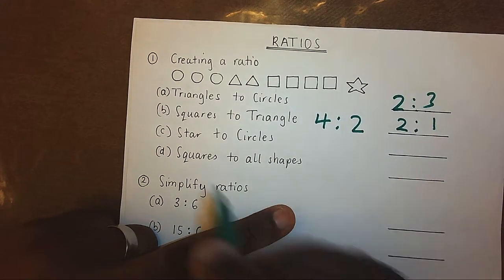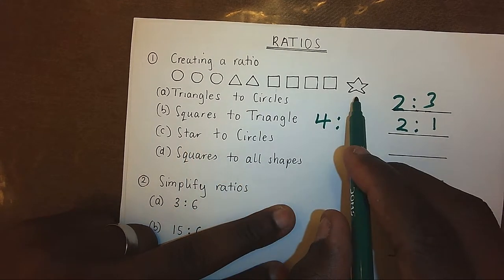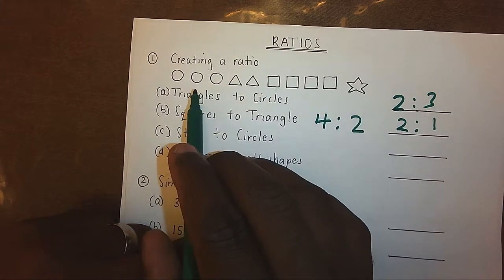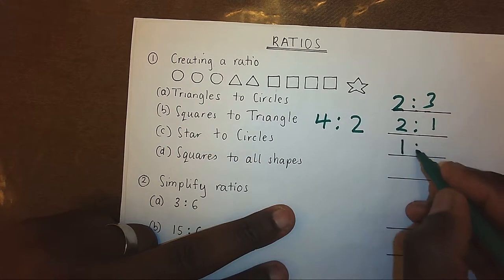Next is the star to circles. We have 1 star, we have 3 circles. That means 1 ratio 3.